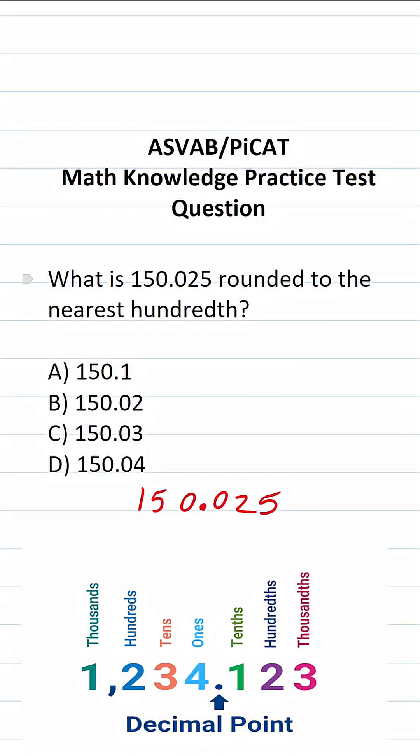In this case, we're rounding to the nearest hundredth place. So in case you forgot what place that is, it's going to be right here. It's two spaces to the right of the decimal. So that's going to be two right here.